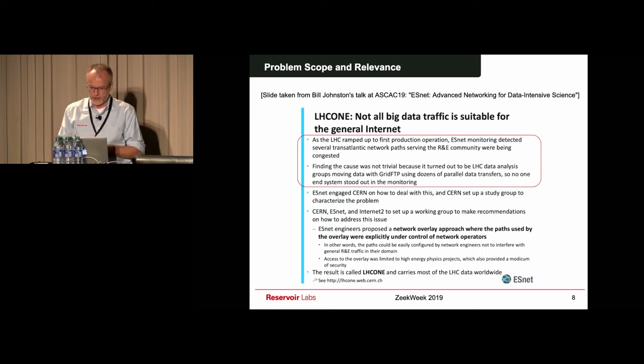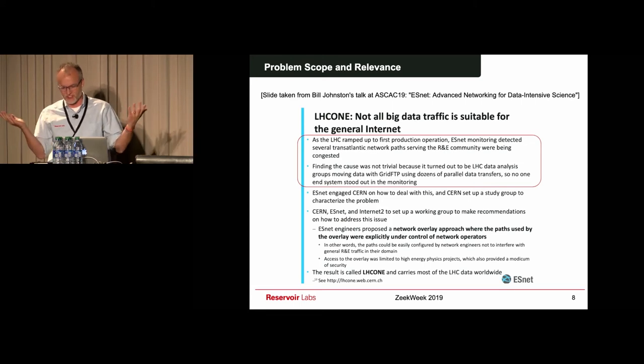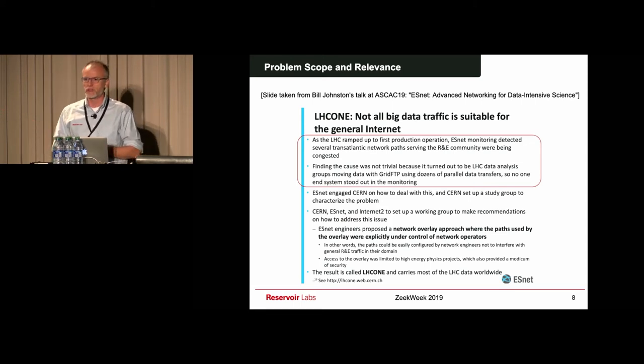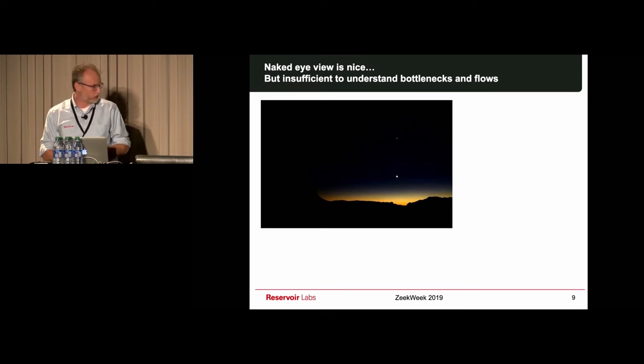To put more context to the problem, this is a slide from Bill Johnston at ESnet this year. Bill was describing a situation in the Large Hadron Collider by which they were trying to ship this huge amount of data from the collider in Geneva all the way to the U.S. The network was just not working. It turned out that there was a bottleneck in the Transatlantic connection, but it was very hard to figure that out.